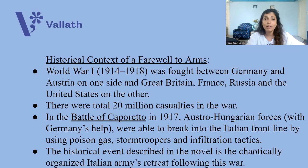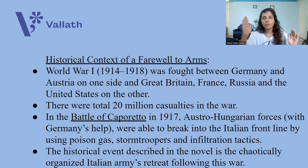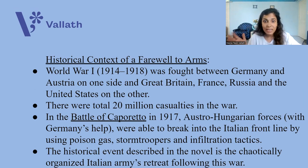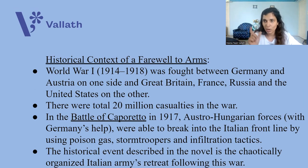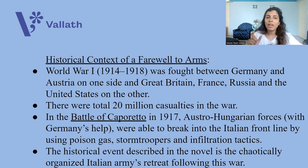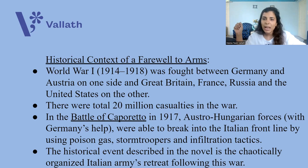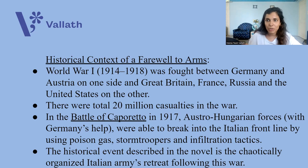Before we start the novel, I have to tell you the historical context. World War I was fought between Germany and Austria on one side, and Great Britain, France, Russia, and the United States on the other. There were a total of 20 million casualties in the war — 20 million people died during World War I. There was a battle during this war in Italy called the Battle of Caporetto. In the Battle of Caporetto in 1917, Austro-Hungarian forces, with the help of Germany, were able to break into the Italian front line by using poison gas, stormtroopers, and infiltration tactics.